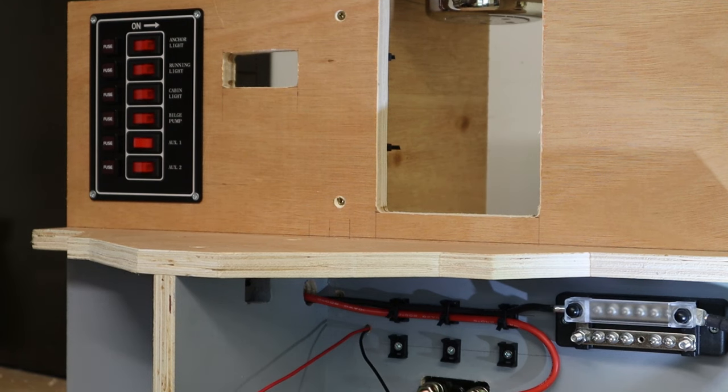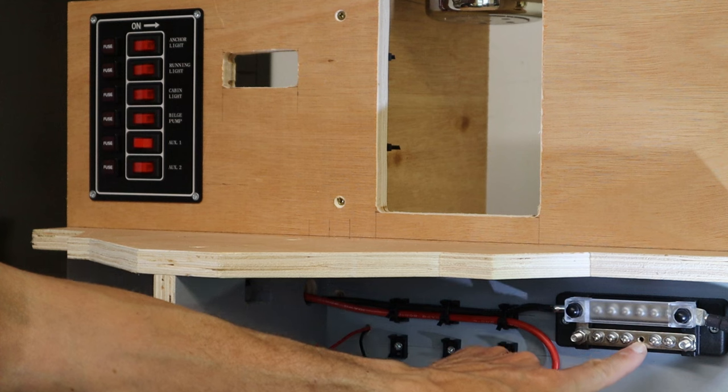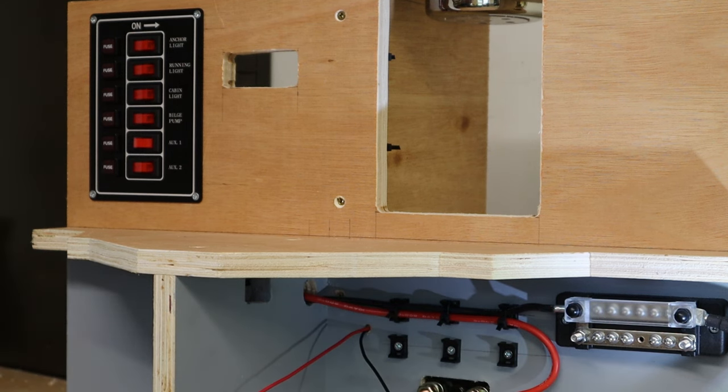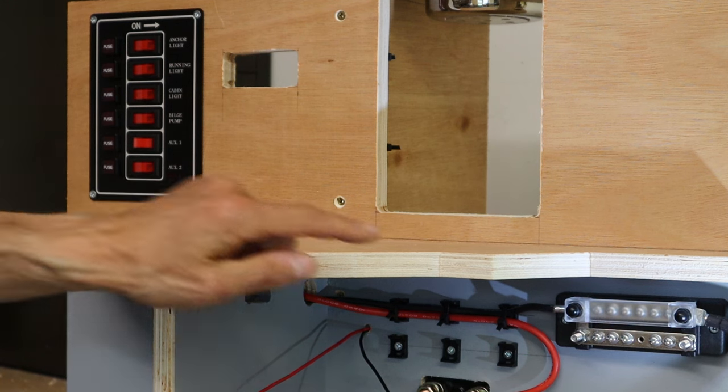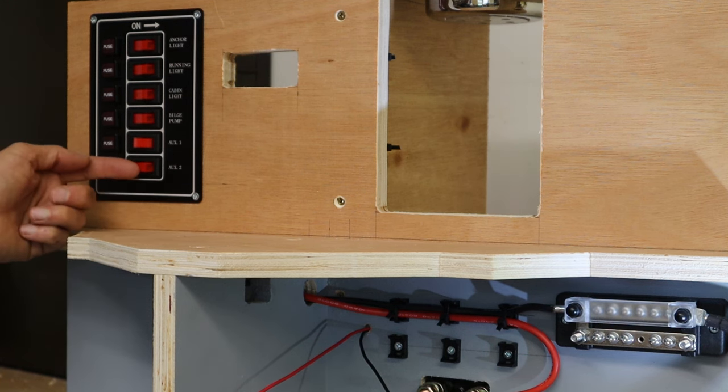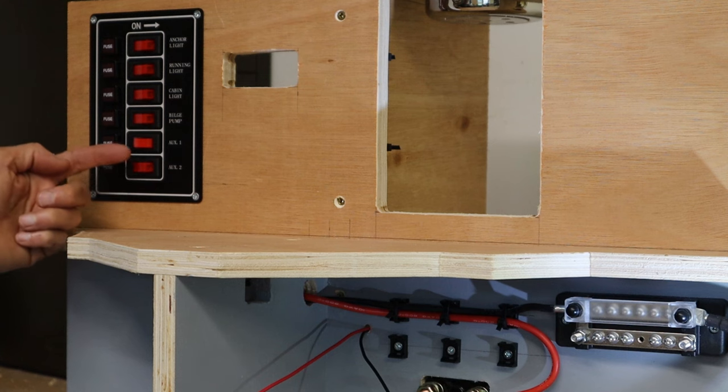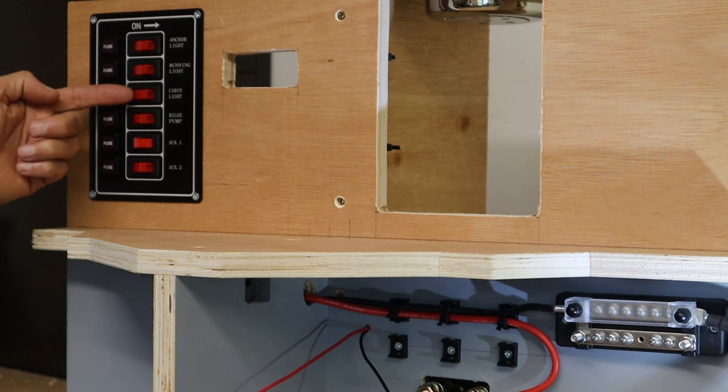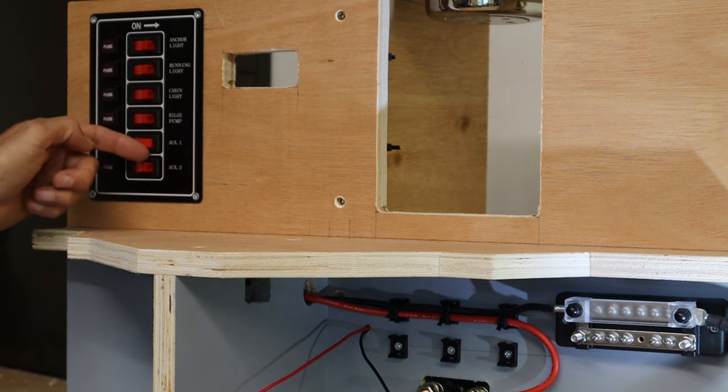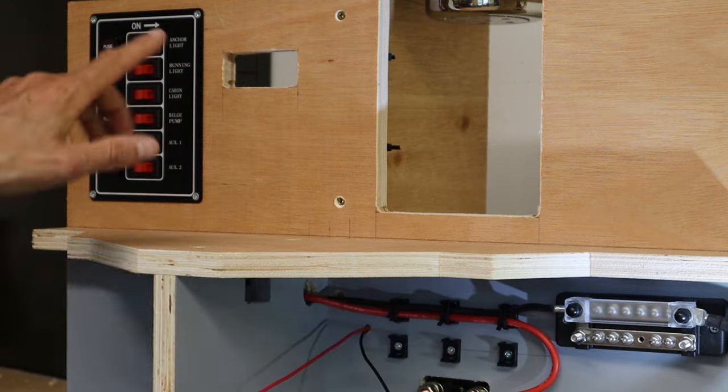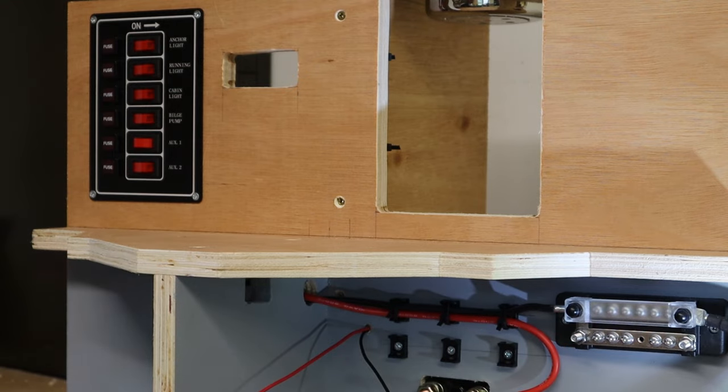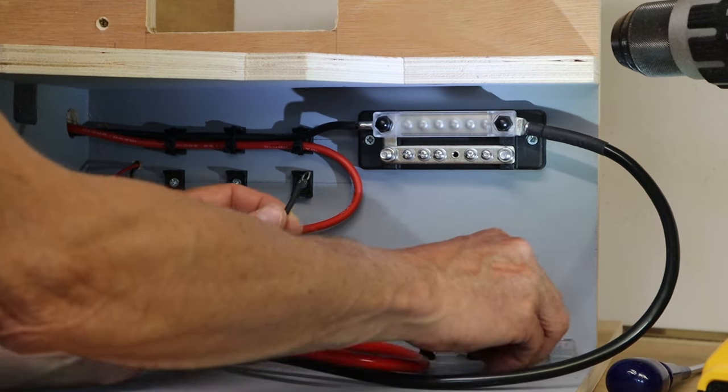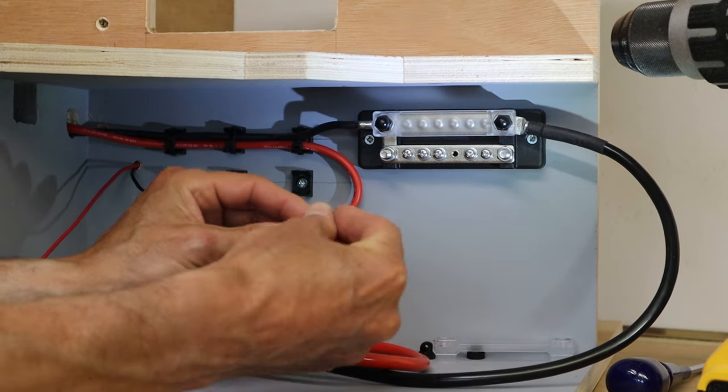So just earlier I said I was going to use the fourth terminal connector on the buzz bar. The reason for that is I just thought I'd have some relationship between the switch panel switches and the buzz bar. So we've got, starting from the bottom, we've got AUX 2, AUX 1, bilge pump, cabin light is the fourth one in. So I thought I might just kind of use that one, two, three, four as some meaningful relationship. It's not that important, but that's what I've chosen to do. So I'm just going to screw this terminal to the buzz bar.